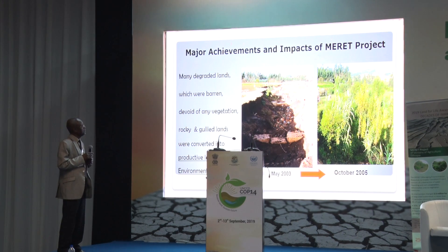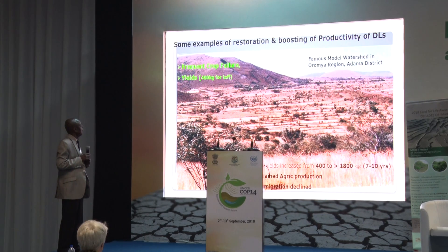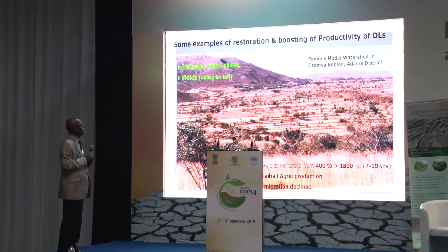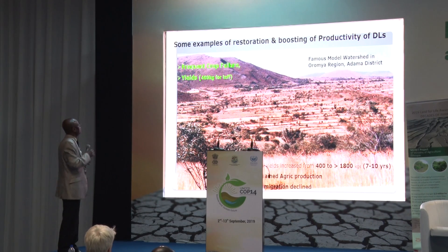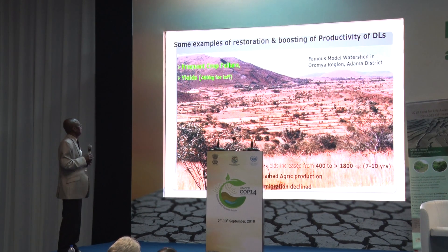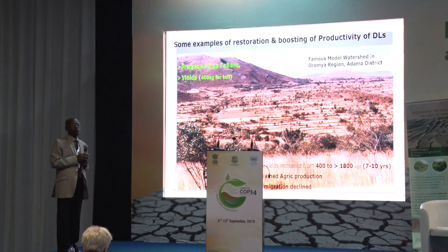Regarding major achievements and impact, many degraded lands that were barren, devoid of vegetation, and ravaged by gully erosion have been changed into productive land and green environments in a relatively short period of time. To illustrate the restoration of productivity, one famous model watershed is in the Adama district — an area that was highly degraded, completely damaged by erosion with no biomass, barren hillsides devoid of vegetation, farmland degraded almost to bedrock, very low fertility and productivity, and frequent crop failure.